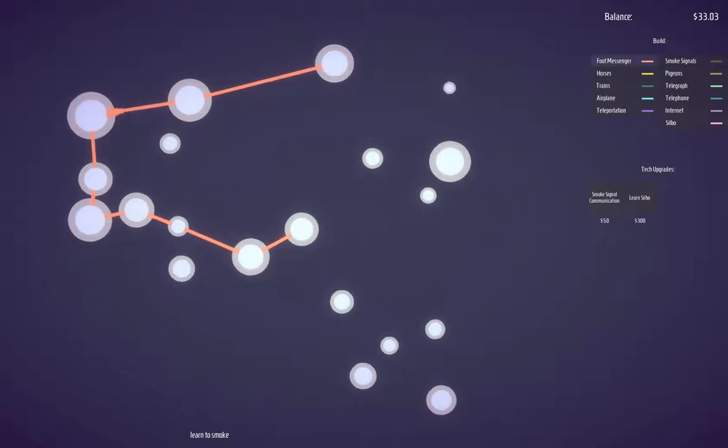We have some... Can we actually undo this? We actually are earning money. The more messages are transmitted, the more money you get. So now we can upgrade to smoke signal and... Increases message transmission rate. Maybe let's learn this first. Okay, now we have a different type of welt.